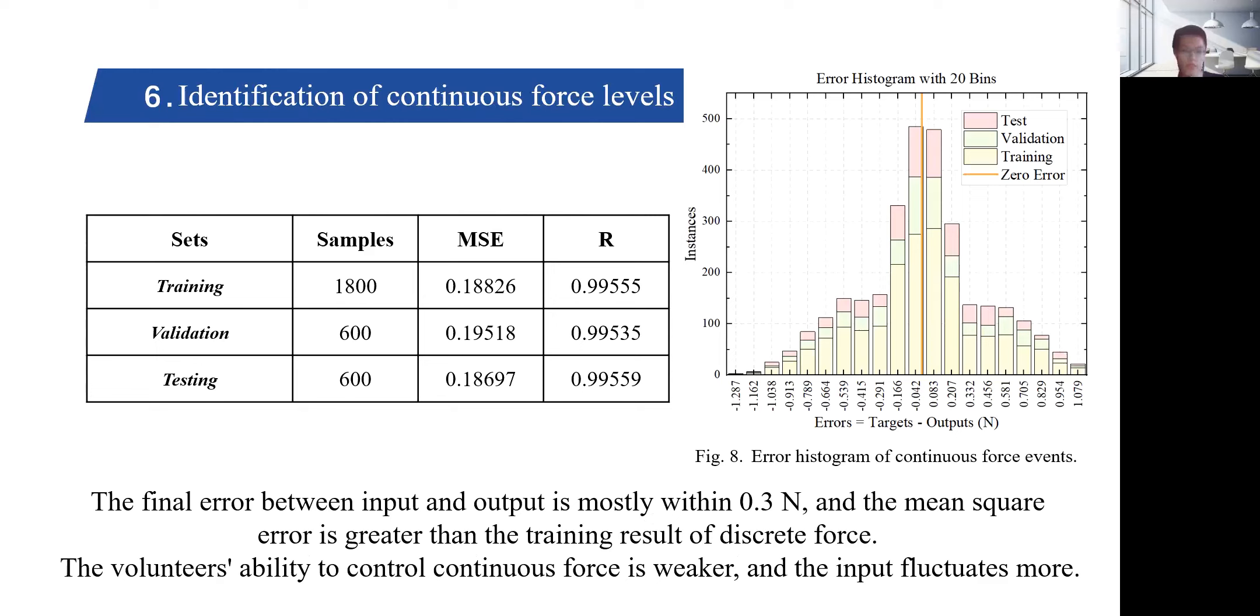And for continuous force, we use the same model structure and parameters to train 5,000 samples. The final errors between input and output are mostly within 0.3 N, and the mean square error is greater than the training result of discrete force. These results indicate that the volunteer's ability to control continuous force is weaker, and the input fluctuates more.